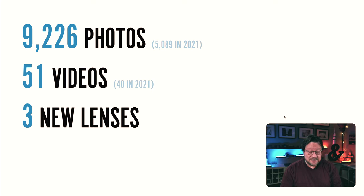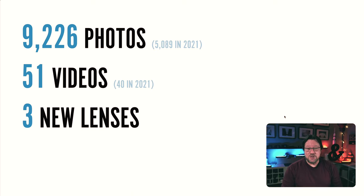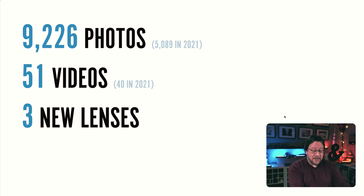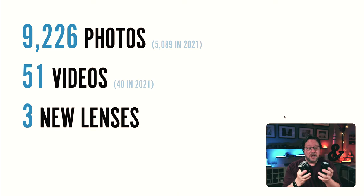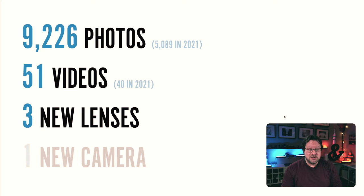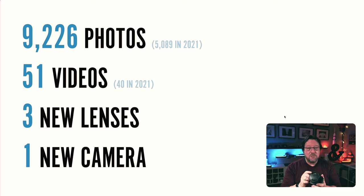I got three new lenses this year: the Viltrox 13mm f/1.4, the Fujinon XF30 f/2.8 macro lens which I'm really enjoying, and the Sigma 18-50 f/2.8 zoom lens. For all three of these there are videos, so I'll leave a link to the playlist for my gear reviews. I also got one new camera this year — the Fujifilm X-H2S — which I really, really like, and I'm glad because it's the most expensive camera I've ever bought.